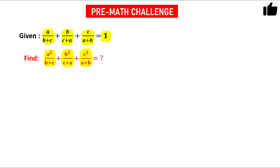How will you do this problem? If you see this problem you can notice one thing — here we have a², b², and c². In the original condition we have a, b, c. This gives me a hint. The hint is: I can multiply the given condition by (a+b+c).